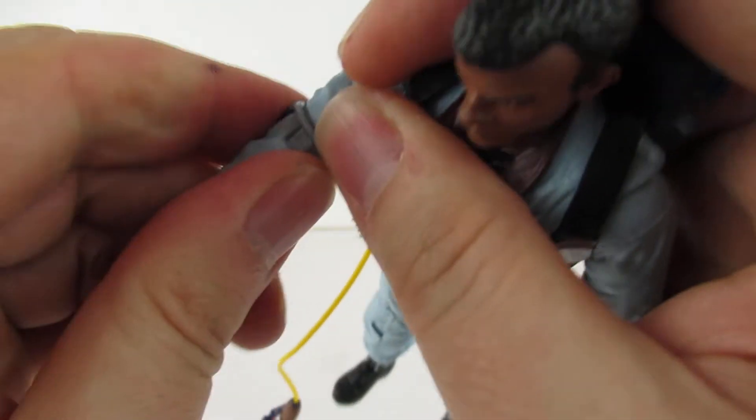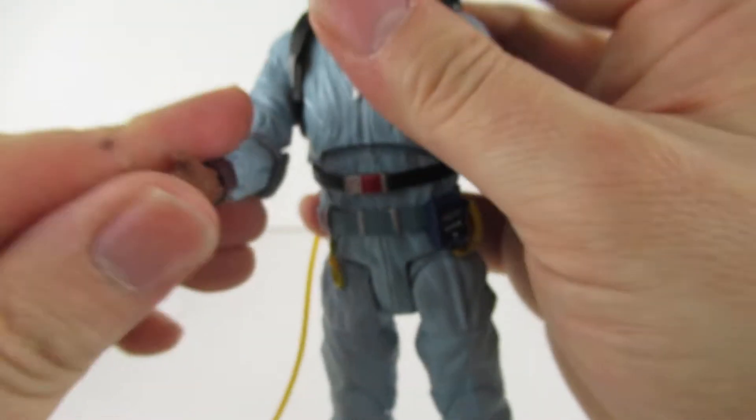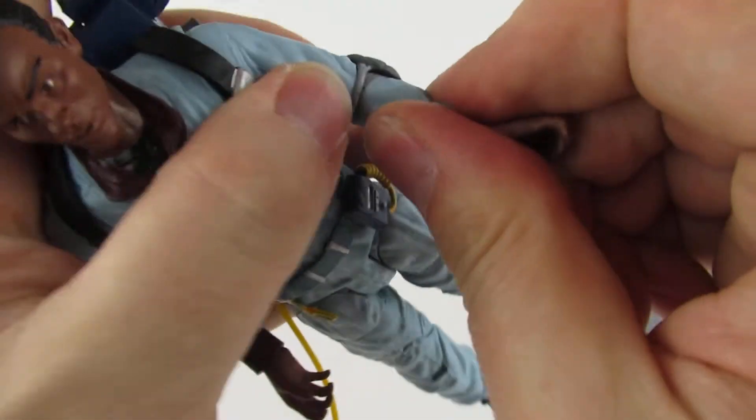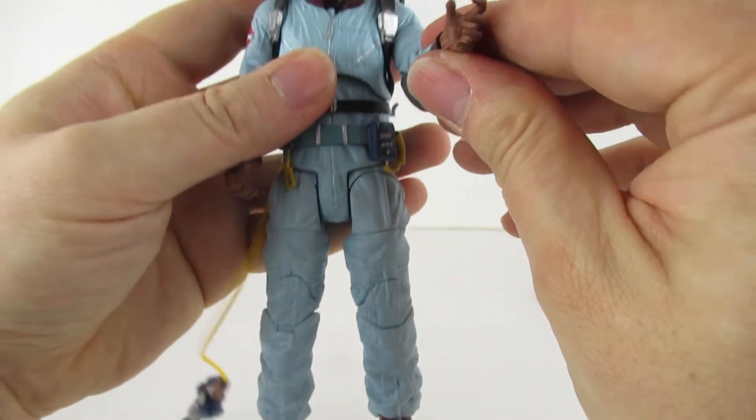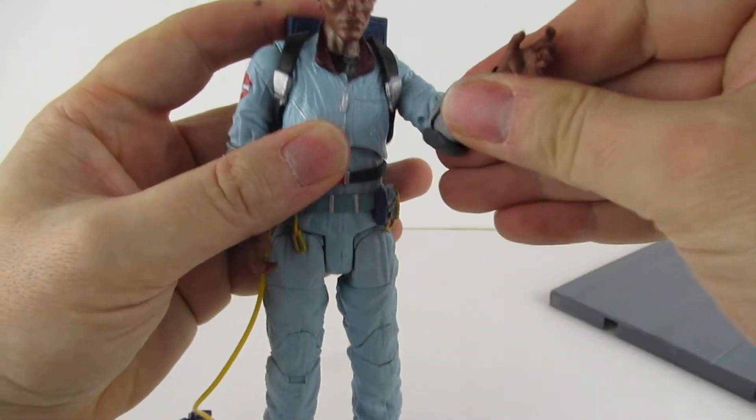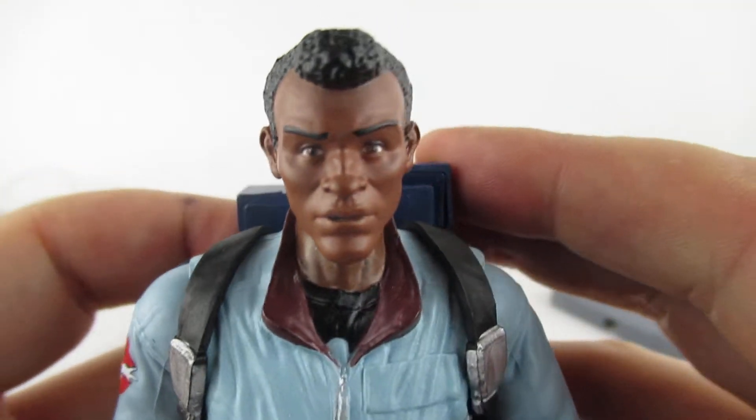So, elbow pads move around. That moves up. A bit of articulation there. That thing's moving around. Not too far. Not too much movement in the elbows. Face, pretty good.